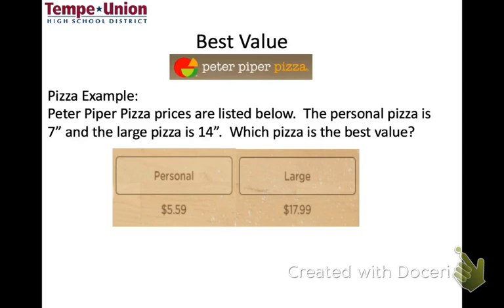Now let's say we're shopping for pizza and trying to figure out which is a better deal. At Peter Piper, there's a personal pan pizza for $5.59 and a large pizza for $17.99. Which one gives you more pizza for the price? We can figure out the cost per square inch by first calculating the area of each pizza.